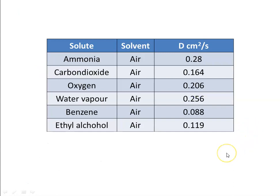An example of diffusion coefficients (in cm²/s): ammonia in air = 0.28; carbon dioxide in air and oxygen in air; water vapour in air = 0.256; benzene in air = 0.088; ethylene alcohol in air = 0.1119 cm²/s. The solvent is air and the solutes are ammonia, carbon dioxide, oxygen, water vapour, benzene, and ethylene glycol.